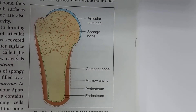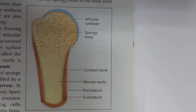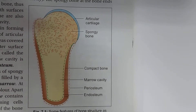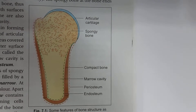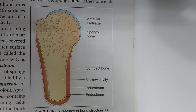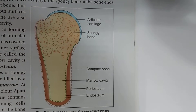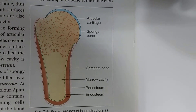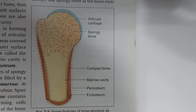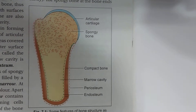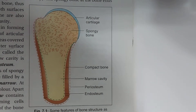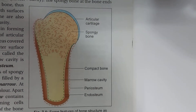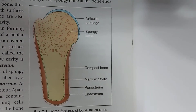Today's topic is the histology of bone tissue. Bone is a special type of connective tissue. Why is it special? Because of the presence of minerals, which are predominantly calcium salts.